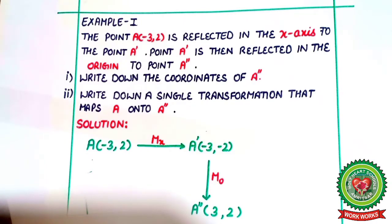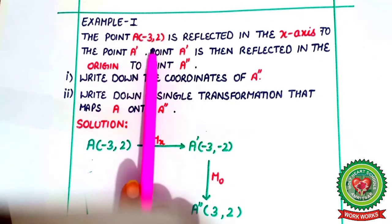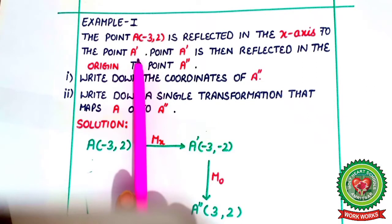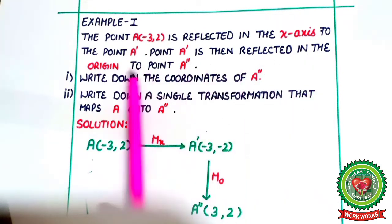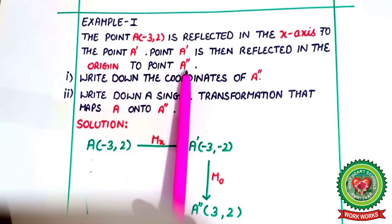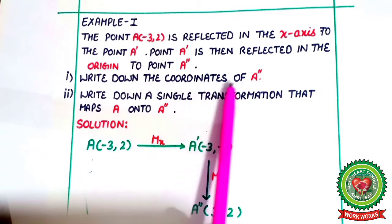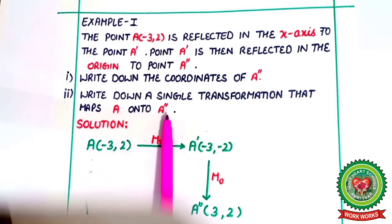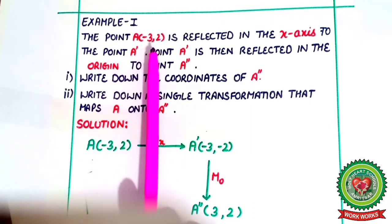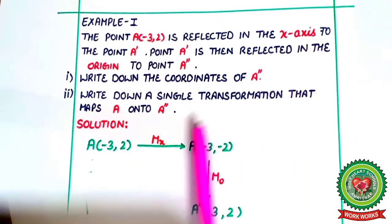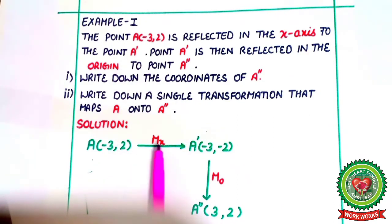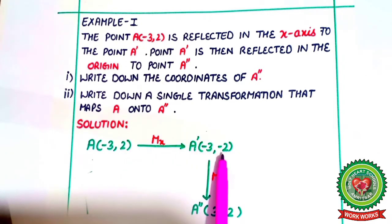Now look at the first example. The point A(-3, 2) is reflected in the x-axis to the point A'. Point A' is then reflected in the origin to point A''. First part: write down the coordinates of A''. Point A(-3, 2) is reflected in x-axis, so changes will come in the ordinate sign. So A' is (-3, -2).